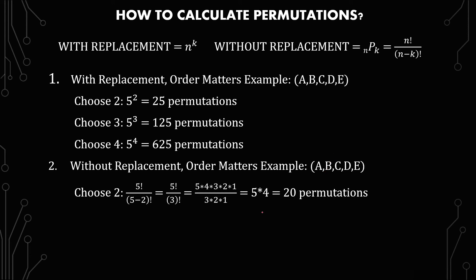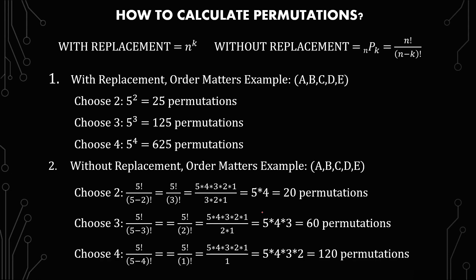For simplicity it may be better to understand that you're simply subtracting one from the next multiplication. So it's 5 times 4 for two, 5 times 4 times 3 for three, 5 times 4 times 3 times 2 for four.